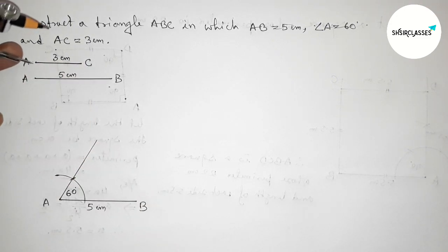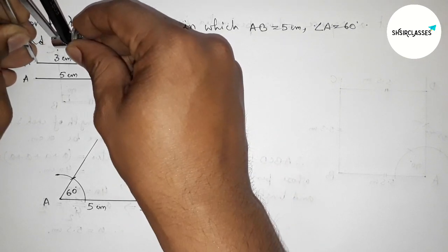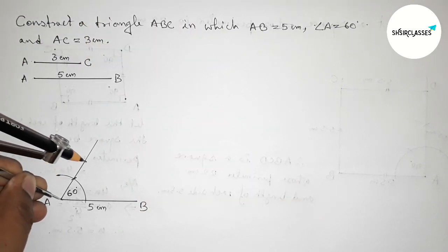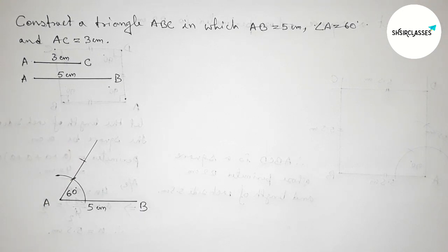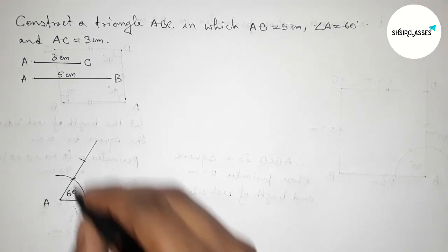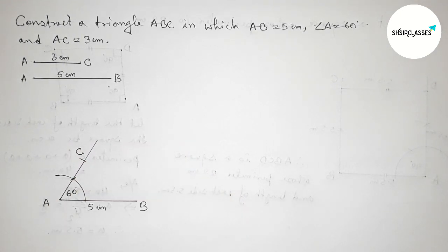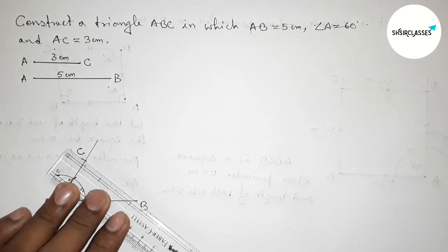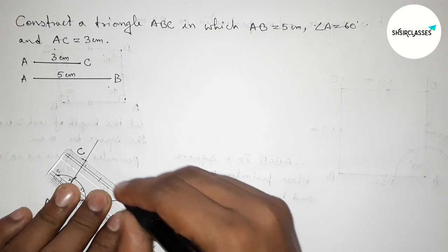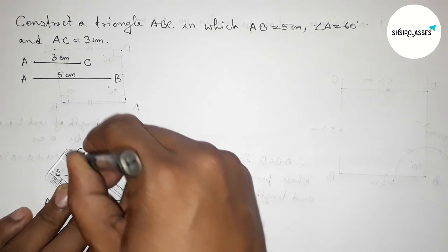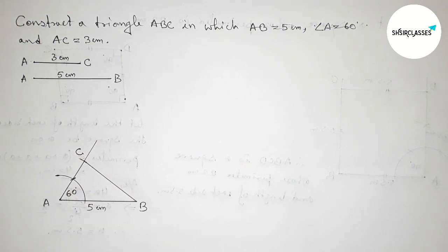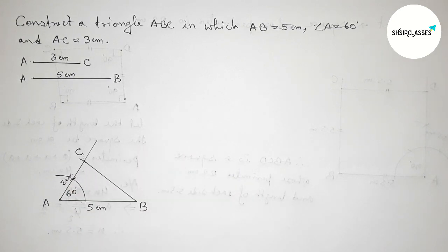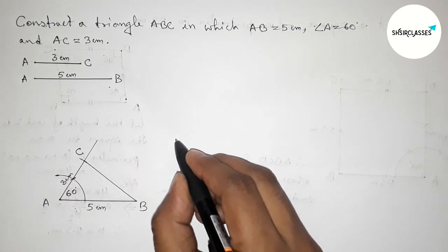Next, taking the length AC equals 3 centimeters with the help of a compass. Putting the compass on point A and taking this length, then cutting an arc on the 60 degree ray. Taking this intersection as point C.